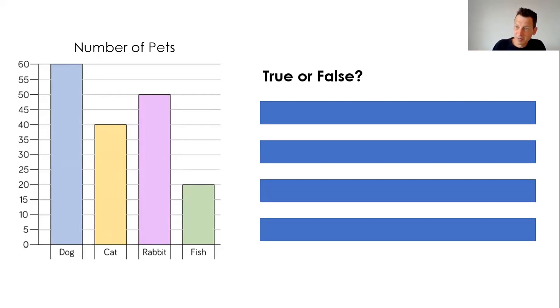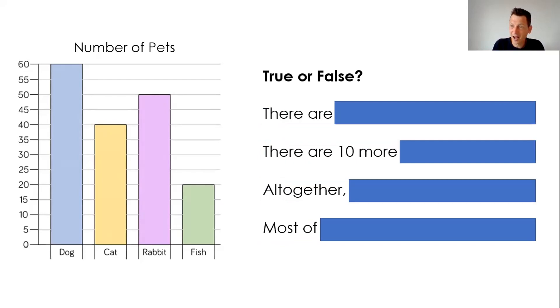And then if I want to be more directive, I could show the first part of each statement. So there are, as opposed to there are 10 more, altogether, and most of, for children to predict. Well, what could the rest of the statement be? What information would be required in the rest of the statement there? So let me just give you a moment to consider what they could be. And feel free if you want longer to pause the video.